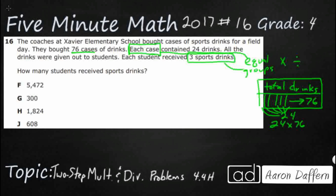It looks like we're going to start with some two-digit by two-digit multiplication — 24 times 76. We learned that in fourth grade. We're going to start with the ones place. Four times six is 24. Using the standard algorithm, we carry that two. Then we go to the tens place: six times two is 12, add that two back in is 14. We put that right there since we're dealing with the tens place.